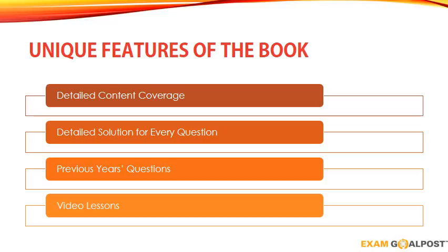This book contains a wide range of topics in the English language from the perspective of banking examinations. The entire content of the book has been divided into 11 chapters. Detailed and lucid explanation has been provided for each topic covered in these chapters. The book contains detailed explanatory elucidations for every question, which not only provide insight into the details of the answer but also help you handle similar types of questions.